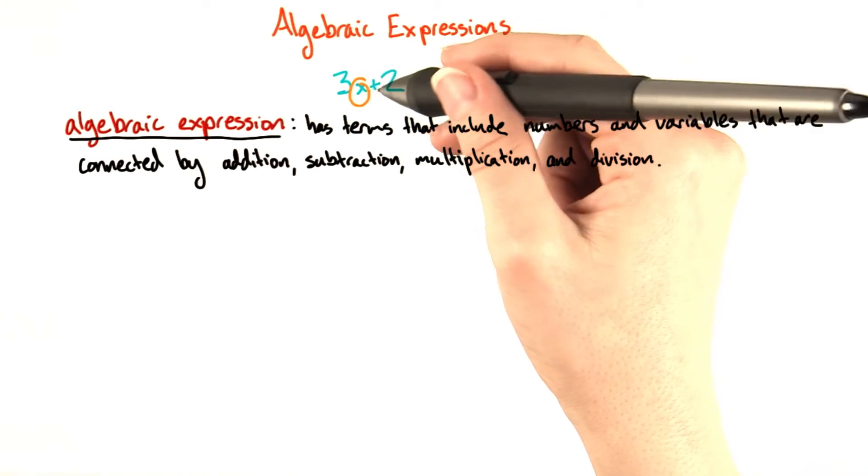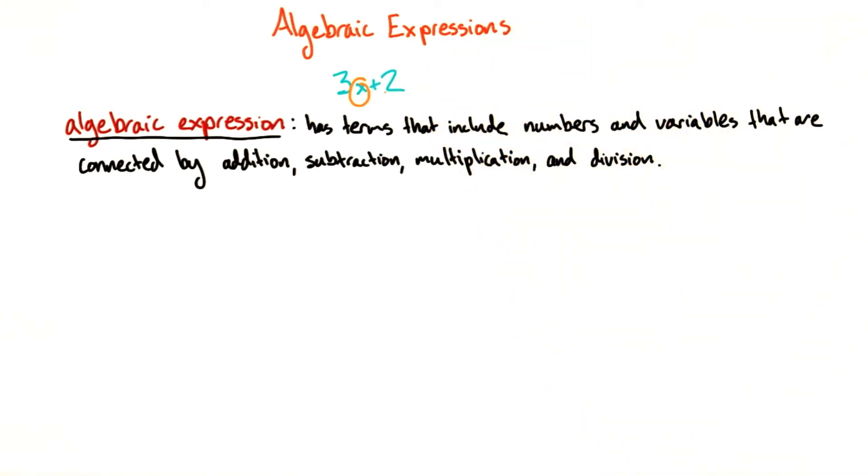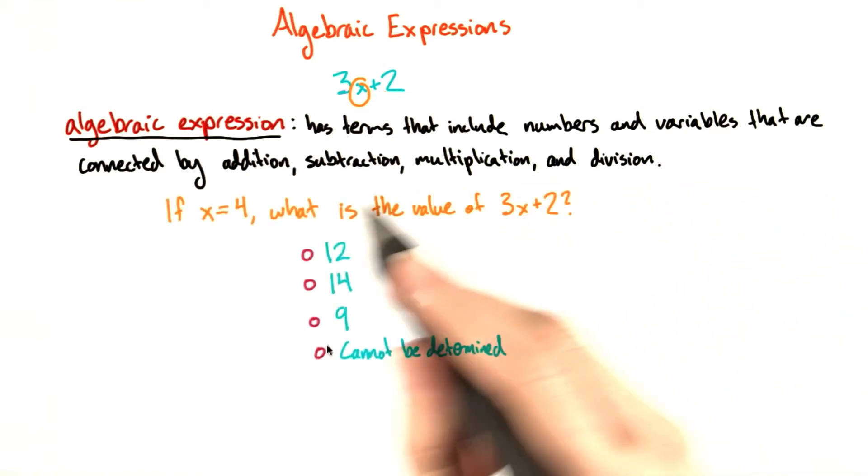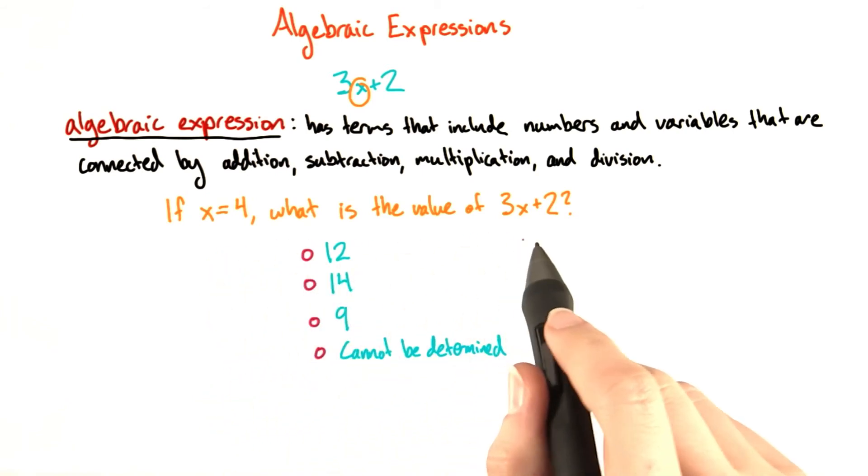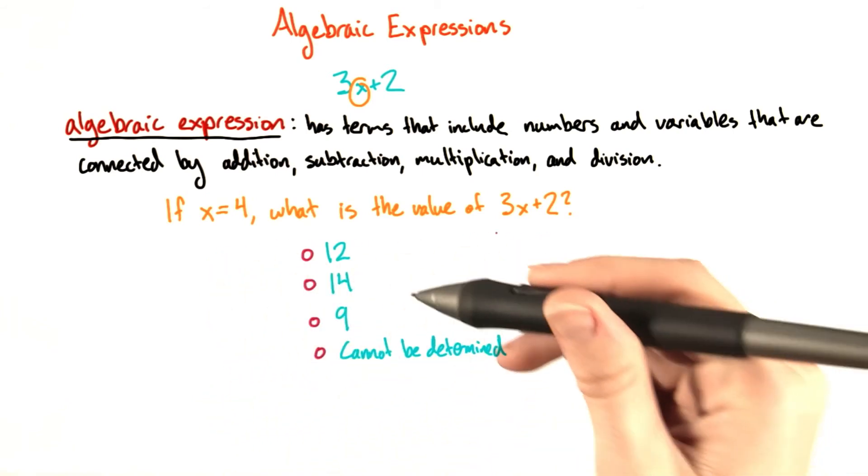In the algebraic expression 3x plus 2, we have not been given a value that we can substitute in for x, so x can be anything. For now, let's say that x equals 4. If x equals 4, what is the value of 3x plus 2? Please pick one.